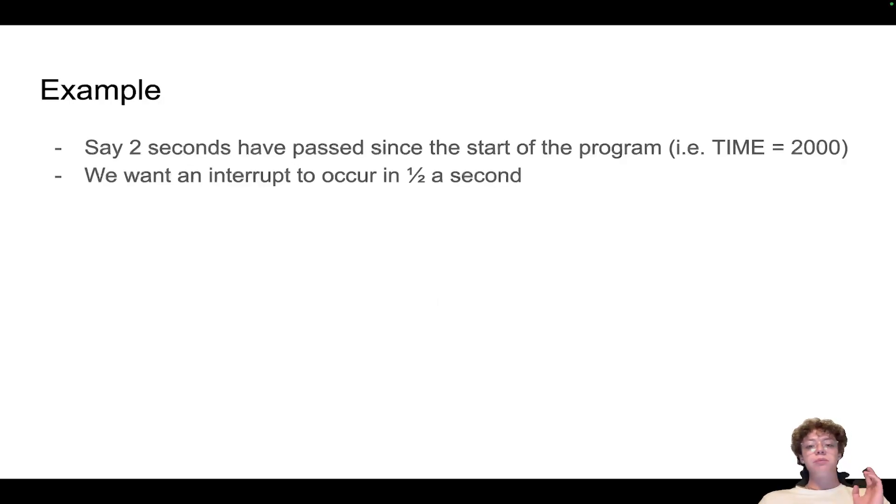Okay, so let's actually put this into some code. Let's assume that two seconds have passed since the start of the program, so TIME is equal to 2000. So that place in memory that we call TIME, that everyone agrees upon, has a value of 2000. And let's say again we want to interrupt in half a second or 500 milliseconds.